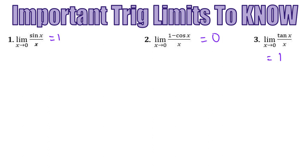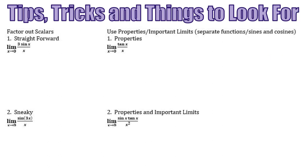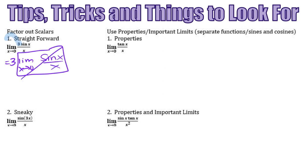Now that we know these three basic trig limits, let's talk about how we can use them when we have a limit resulting in indeterminate form. Looking at number 1, there's really just a scalar here. We already talked about limit properties that allow us to move that scalar out in front. So this is really the same as 3 times the limit as x approaches 0 of sine of x over x, which equals 1. So the limit as x approaches 0 of 3 sine of x over x is equal to 3.